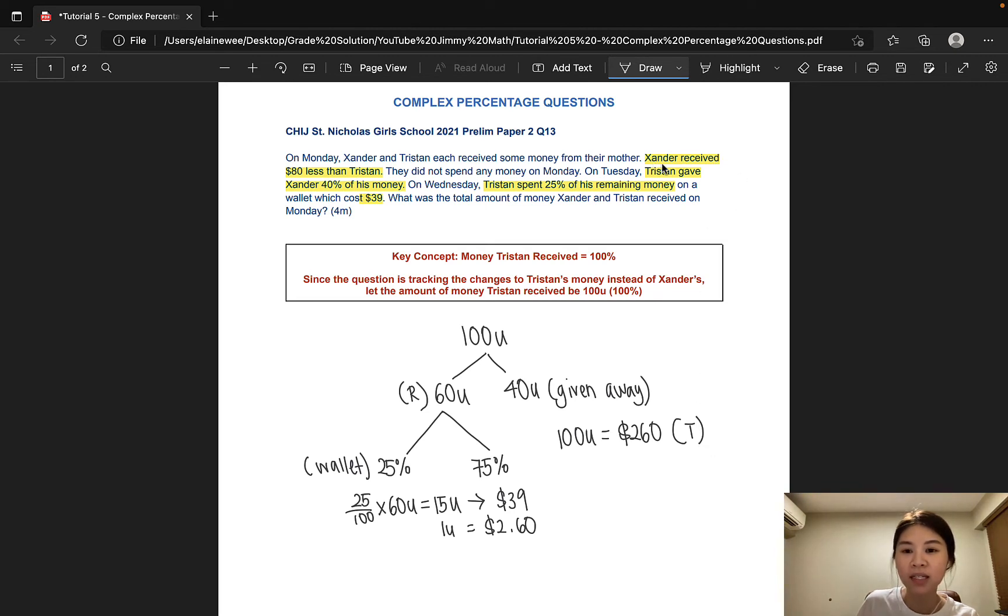Going back to the question, Xander received $80 less than Tristan. So we simply subtract 80 from $260. And that would give us $180. Since the question is asking us to find out the total amount of money both boys received on Monday, we simply add these two amounts together. So $260 plus $180 would give us $440. And that is our answer to this question.